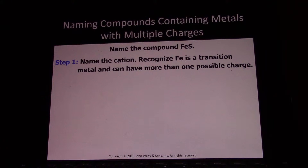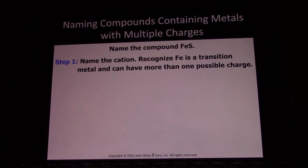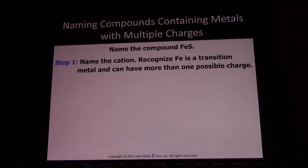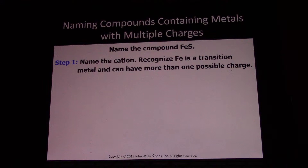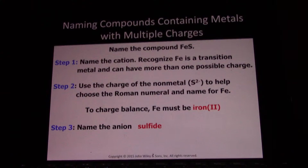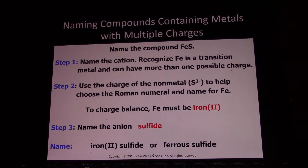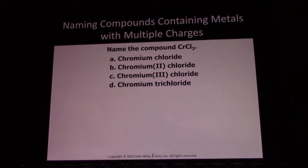Let's name the compound FeS. When dealing with metals that can have multiple charges, you have to figure out what the charge is based on the anion. Here we have sulfide. Sulfide is in group six — it's negative two. That negative two is being balanced by one cation of iron, so it has to be positive two. This is iron two sulfide, or ferrous sulfide. You figure out the negative charges first, then find the right positive charge to neutralize them.